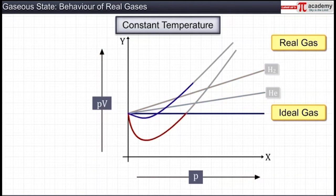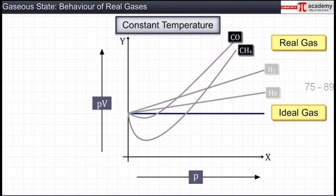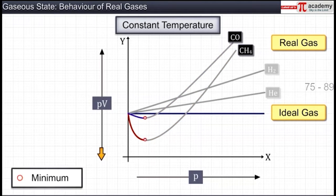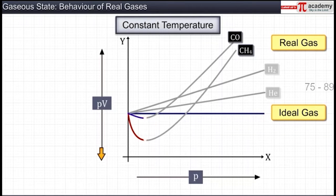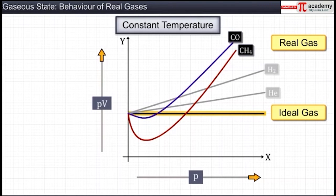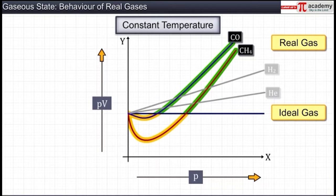Whereas for other gases such as carbon monoxide and methane, the PV value first decreases with the increase in pressure and reaches a minimum. Then this value increases with the increase in pressure, so that it crosses the straight line of the ideal gas. Thus, a negative deviation is observed initially, followed by a positive deviation, as shown in the graph.